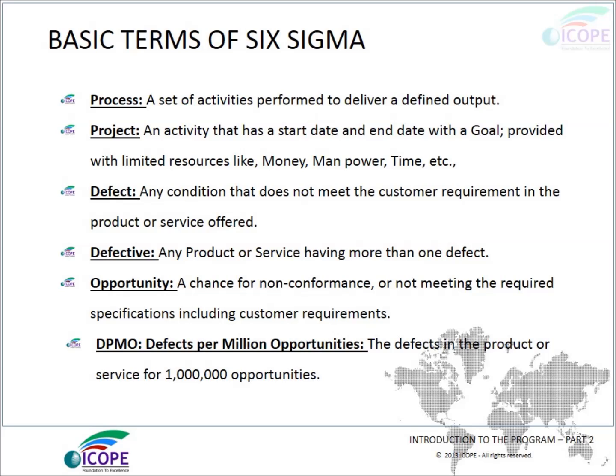What is defective in Six Sigma? Any product or service having more than one defect opportunity — any chance for non-conformance or not meeting the required specifications including customer requirements. What is DPMO, or defects per million opportunities? The defects in the product or service for one million opportunities.